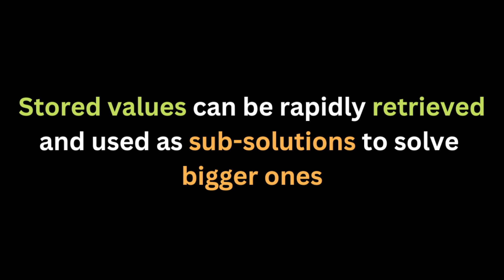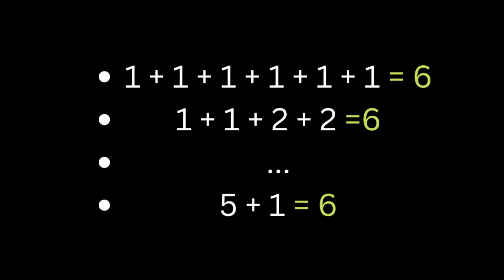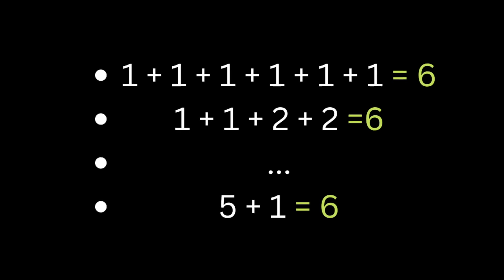In order to better understand it, let's look at the Coin Change problem. Suppose we are given a list of coin values — for example, one, two, and five — then you are given an amount of six and instructed to locate the fewest coins needed to make it.